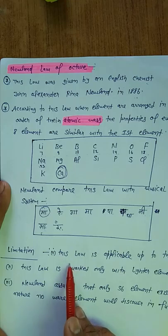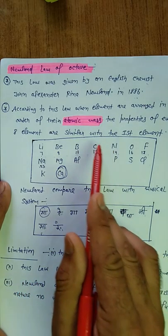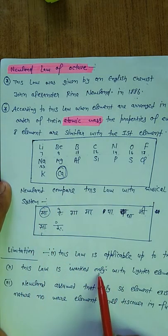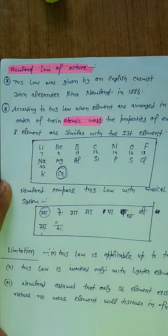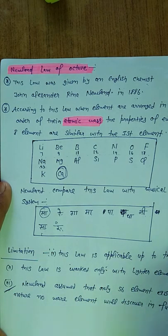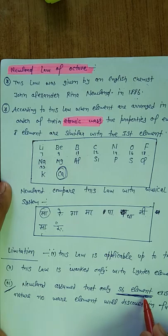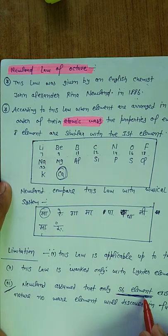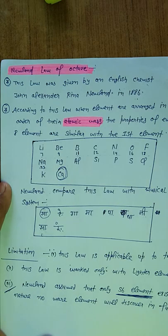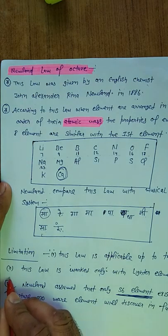Ki Newland ka law tha jo aapka calcium tak hi applicable ho paya. Second limitation aap padhonge ki jo ye wala classification tha sirf lighter elements ke liye hi possible tha. Means jin elements ka mass number kam hota hai usi ke liye ye wala law applicable ho paya. Iske alawa third jo limitation thi, Newland ne bola ki chemistry ke andar sirf 56 element hi exist karti hai. Ki hamari chemistry ke andar sirf 56 element hi exist karenge and in the future ki future ke andar 56 se zyada koi bhi elements aapko chemistry ke andar nahi milne wala. But aap sabhi ko bahut achhe se pata hai aaj hamare paas bahut saare elements hai jo ki discover ho chuke hai. Means ye wala point bhi Newland ka ek major limitation ke andar discuss kiya gaya.